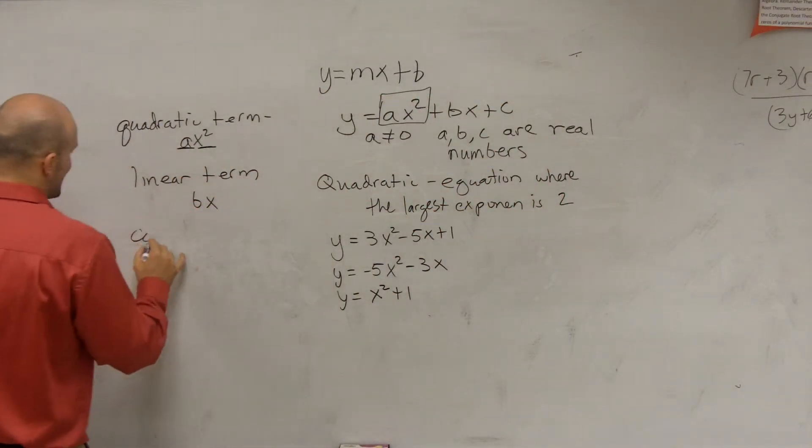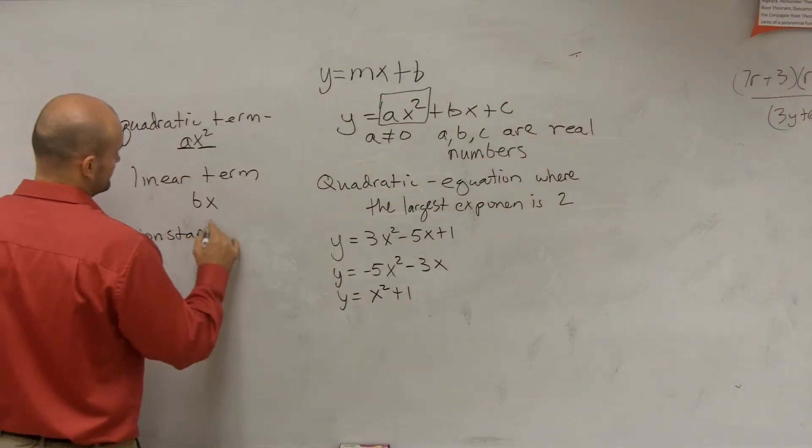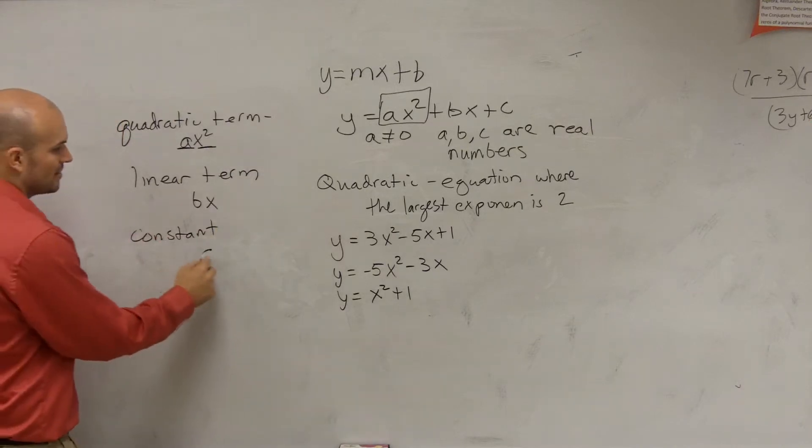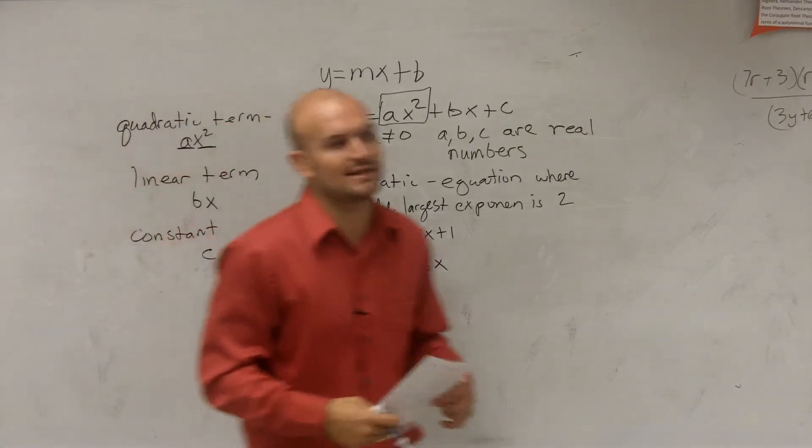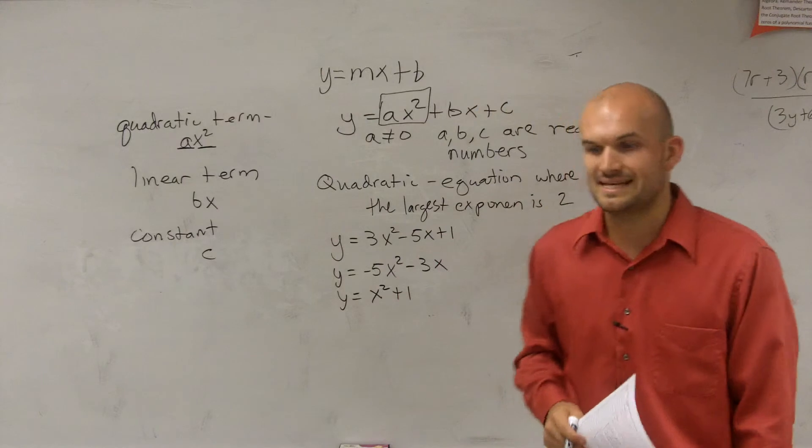And then the last one is we have our constant term. And our constant term is just going to be our number at the end, which we call c, all right?